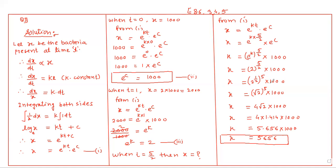2 raised to 5/2 can be written as 2 raised to 2 into 2 raised to 1/2, which gives 4 into root 2. Root 2 is 1.414, so x equals 4 into 1.414 into 1,000, which gives approximately 5,656. That is the final answer. The question is very easy — just need practice. How much you practice, you will get much more marks.